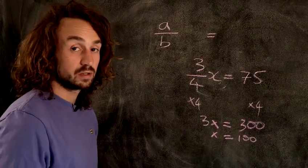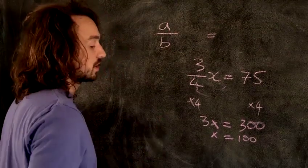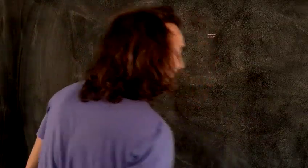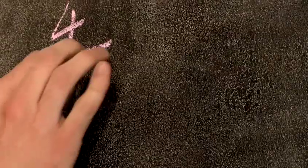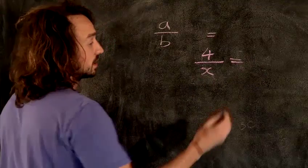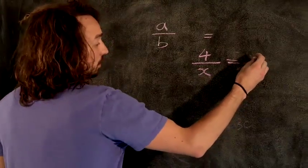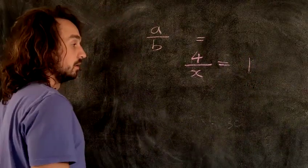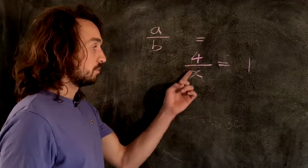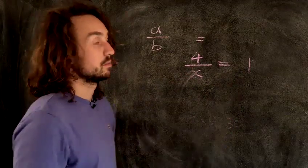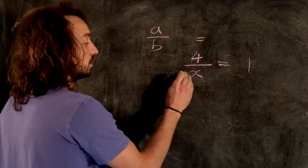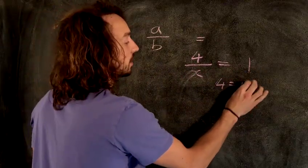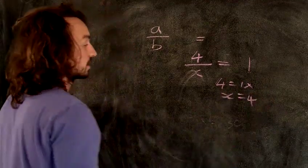Now there's much more complicated equations with fractions in. An example of one would be something like this: four over X equals one. Now we've got X on the bottom, it's on the bottom over here. How do I get it up to the top? Well, I have to multiply both sides by X. That gets rid of it over here, it swings up to the top here, and I get four equals one X, which is X equals four. That's simple.